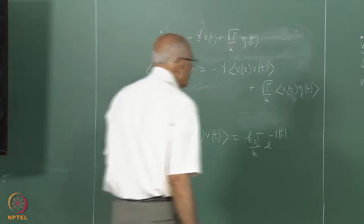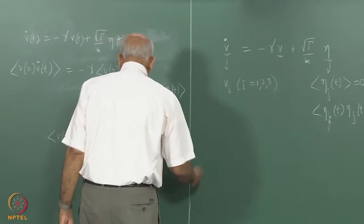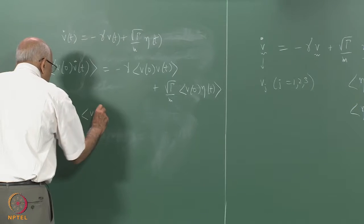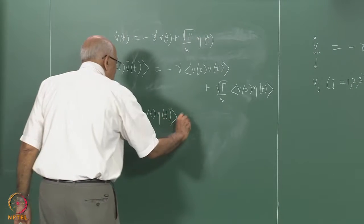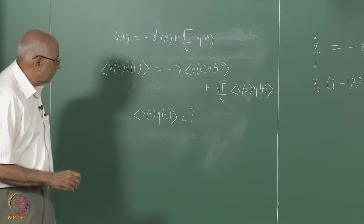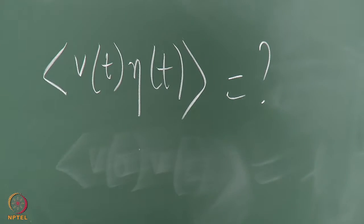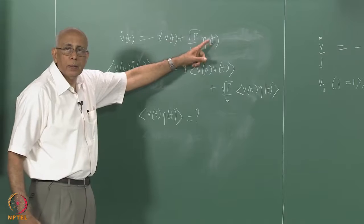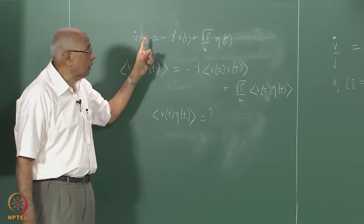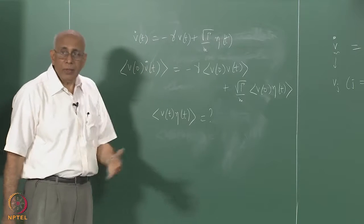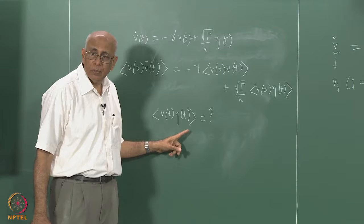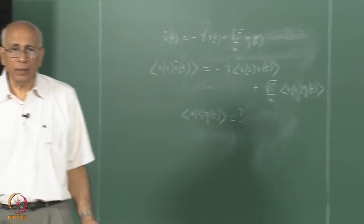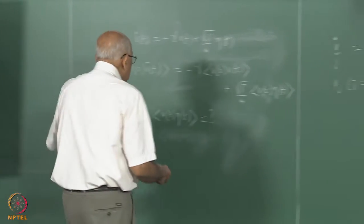At equal times, what about ⟨v(t)eta(t)⟩? This is a more delicate question, but the same argument applies: eta(t) controls the acceleration, not the value of the velocity. The force at equal times is like an initial condition, completely uncorrelated to the velocity value. So that is also zero, and causality gives us ⟨v(0)eta(t)⟩ = 0 for all t ≥ 0.